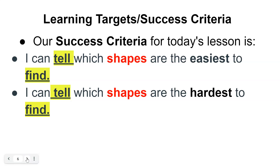Our success criteria for today's lesson is: I can tell which shapes are the easiest to find and I can tell which shapes are the hardest to find. I can verbally say which shapes I can find right away — that's really, really easy.